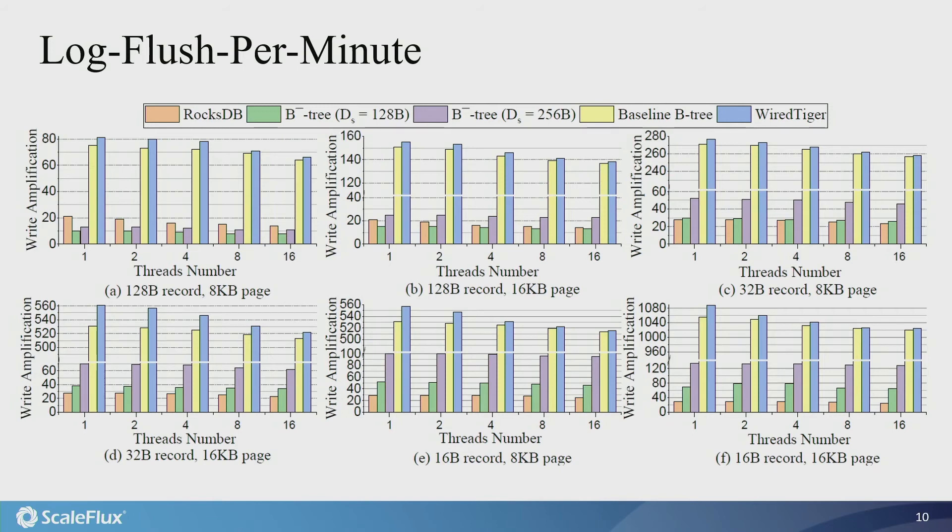So since both WiredTiger and our own baseline B+ tree use page shadowing, they have very similar write amplification. Compared with RocksDB, normal B+ tree has a much larger write amplification, while our B-minus tree can essentially close the B+ tree versus LSM tree write amplification gap.